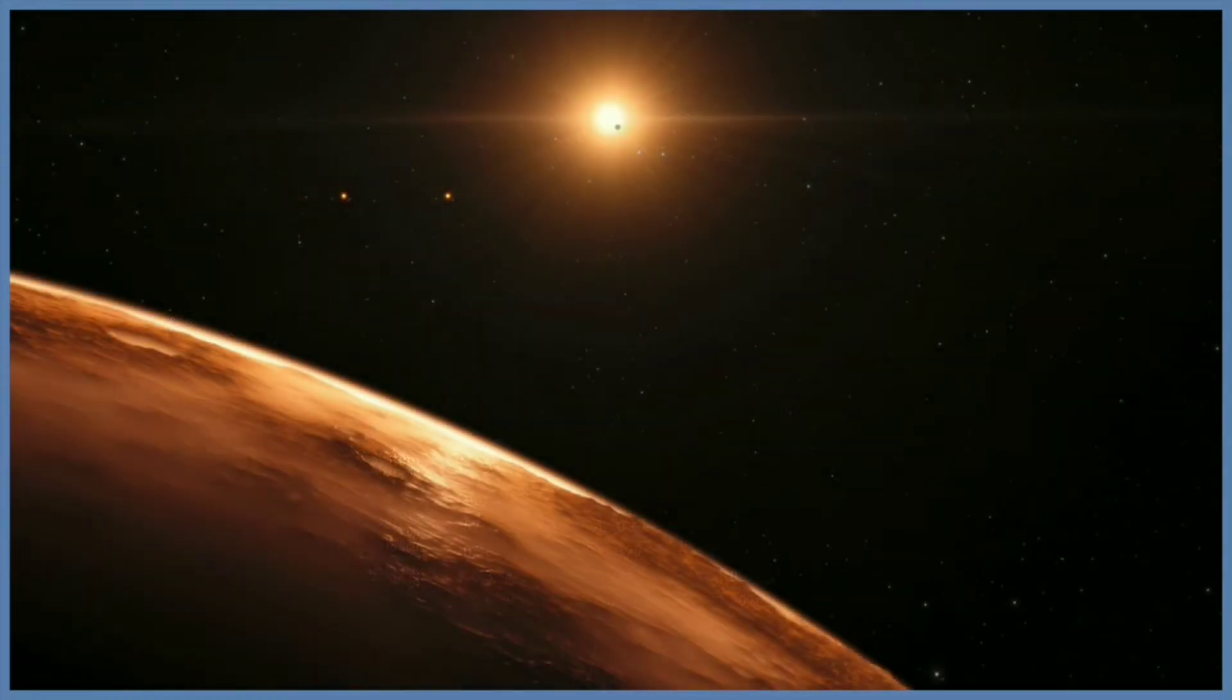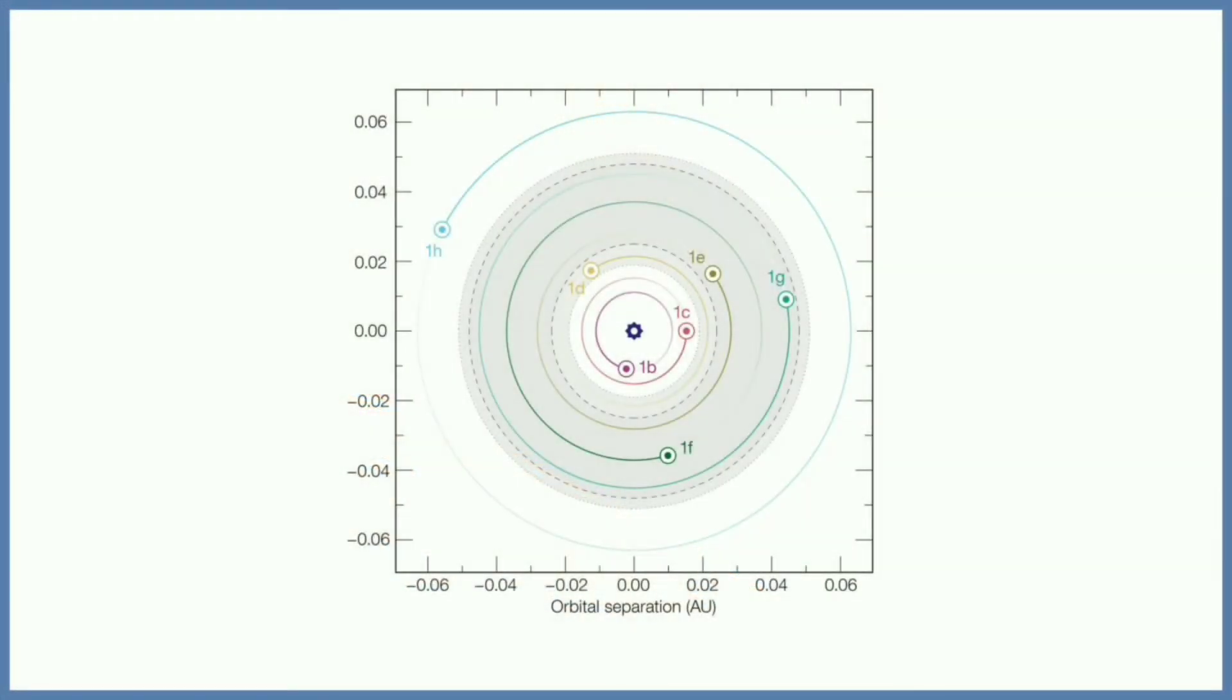Further observations will allow us to determine if these planets are rich in water and also reveal if this water is on the surface. The mass of the seventh and furthest out planet has not been estimated. Scientists believe that it's quite icy, but further observations are needed.